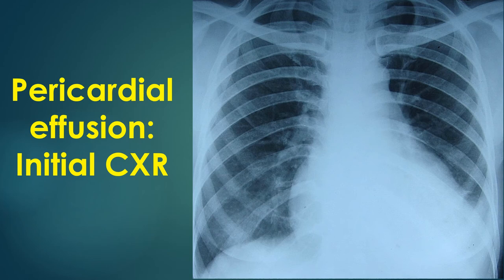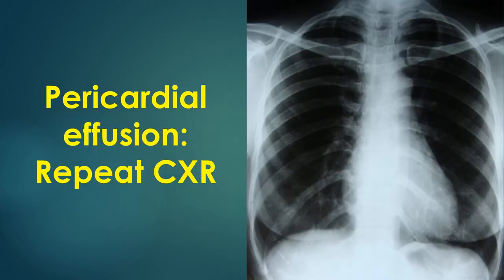The best evidence that the enlargement of the cardiac silhouette on chest X-ray is due to pericardial effusion is a demonstration of serial change — either increase or decrease with treatment. This image demonstrates a smaller cardiac silhouette compared to the previous one after clearance of pericardial effusion, which was documented by echocardiography.